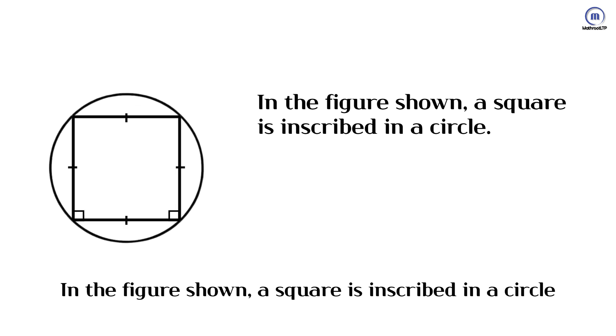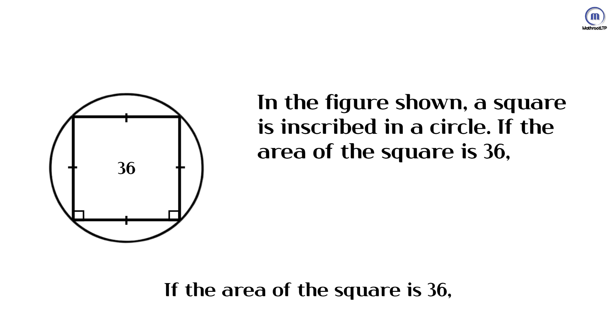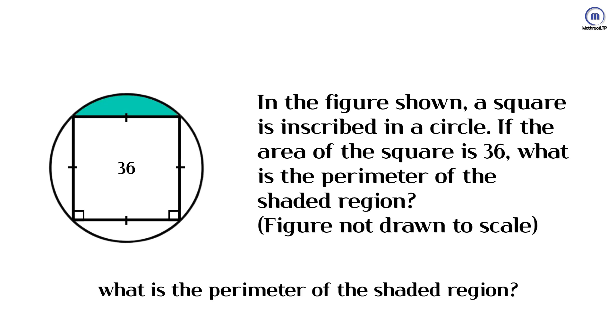In the figure shown, a square is inscribed in a circle. If the area of the square is 36, what is the perimeter of the shaded region?